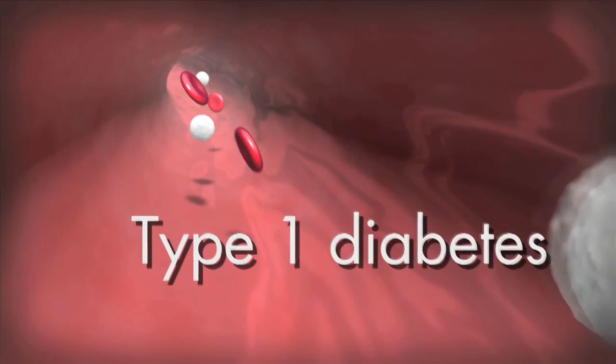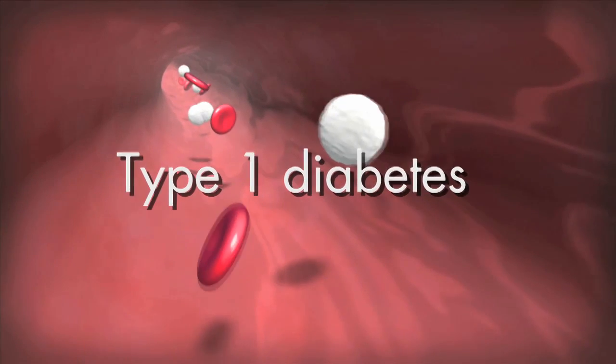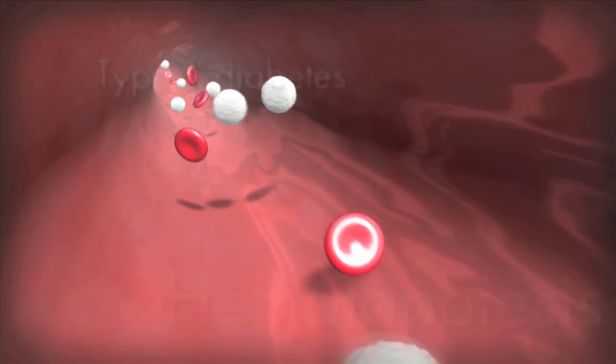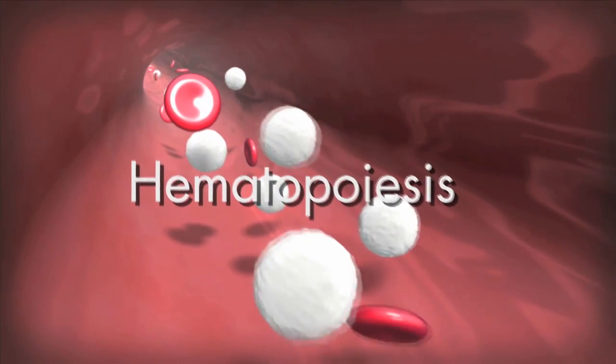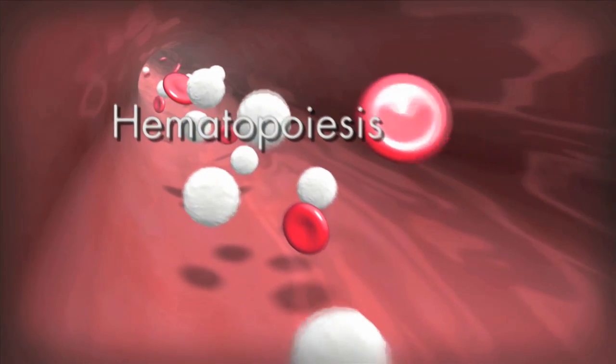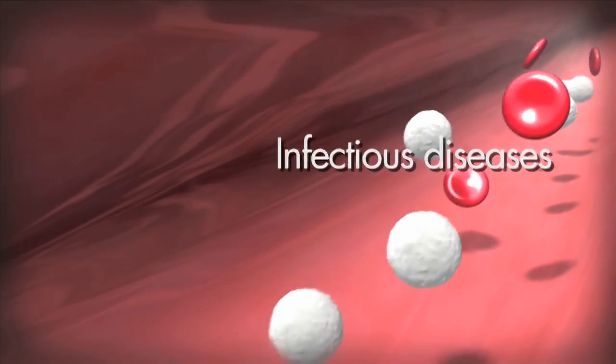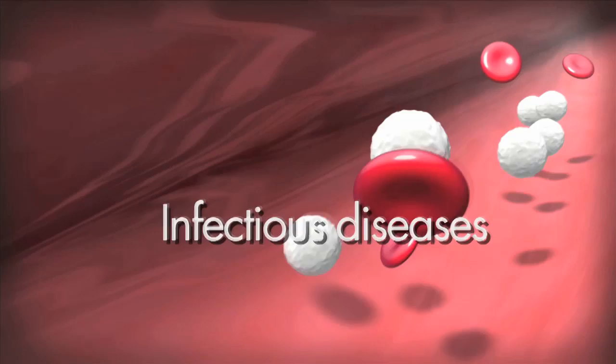Supports growth of human pancreatic islets and the autoimmune lymphocytes that cause type 1 diabetes. Supports a human hematopoietic system including immune cells, allowing study of pathways and therapies for human diseases including HIV, malaria, and other blood-borne illnesses.